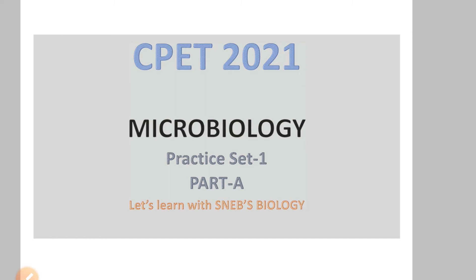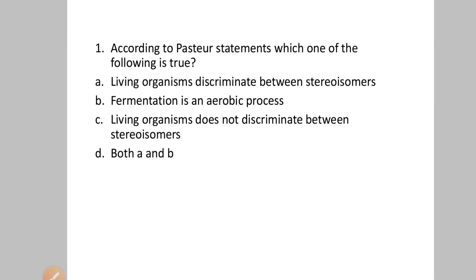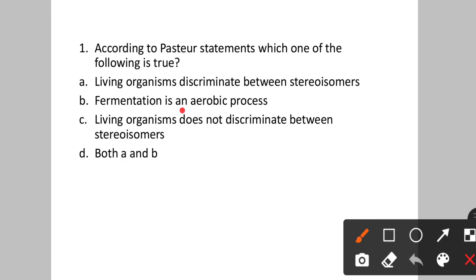Question number one: According to Pasteur's statements, which one of the following is true? Option A: living organisms discriminate between stereo isomers. B: fermentation is an aerobic process. C: living organisms do not discriminate between stereo isomers. D: both A and B. Fermentation is not an aerobic process — it is an anaerobic process. So option B is wrong. Option A is correct: living organisms discriminate between stereo isomers.